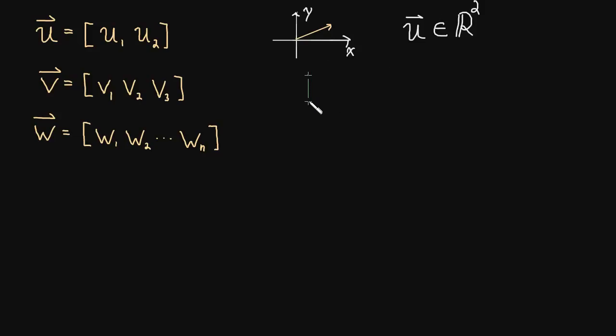What about a vector with three components? Well, it gives us three pieces of information. It tells us how to move in three different directions, and so it lives in three-dimensional space.